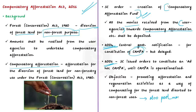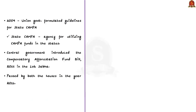In 2009, the Union Government formulated guidelines for a State CAMPA, which would be an agency for utilizing CAMPA funds in the states, intended to accelerate preservation of natural forests, management of wildlife, infrastructure development, and allied activities. However, the problem was there was still an absence of a permanent institutional mechanism for utilizing the funds collected under compensatory afforestation. This resulted in accumulation of huge unspent funds in the ad hoc authority itself — more than 40,000 crore rupees accumulated.